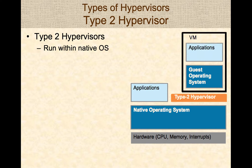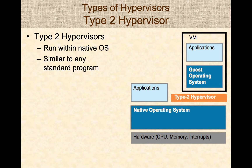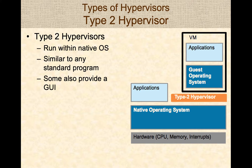The Type 2 Hypervisor is different from a Type 1 in that it runs within an operating system. You would typically run it on top of Windows, Mac, or Linux desktops. These Type 2 Hypervisors run similar to any other standard program — you double-click them and they start running. Many Type 2 Hypervisors also provide a graphical user interface, or GUI, that enables you to easily click buttons and set up new guest operating systems and run them.